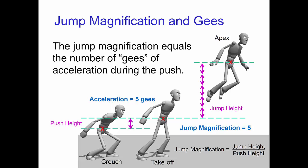If you were strong enough to accelerate your body to a jump magnification of 5, this would still be a challenge because your acceleration during the push would be 5 G's. This means that you would probably black out from doing this type of jump.